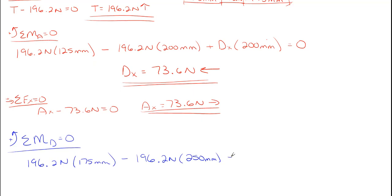Lastly, we have our reaction at A_X. It will be rotating counterclockwise about D, so 73.6 newtons times its vertical distance to D, which is 200 millimeters. Does this come out to be zero? Well, it does not. It actually comes out to be five.